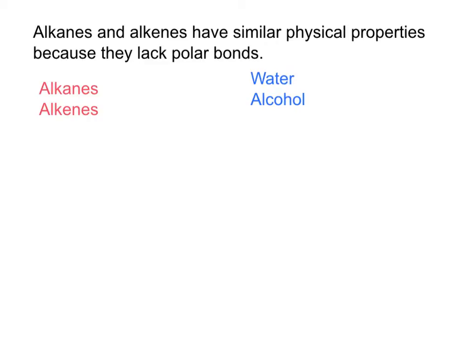Before looking at the chemistry of the family of alkenes, it is worth recalling some important differences between these families. Hydrocarbons such as alkanes, alkenes, and alkynes, unlike electronegative atoms such as oxygen or nitrogen, will not have bond polarity. These are carbon-carbon and carbon-hydrogen non-polar bonds. Because of that, they will have density less than one and will not mix with water.